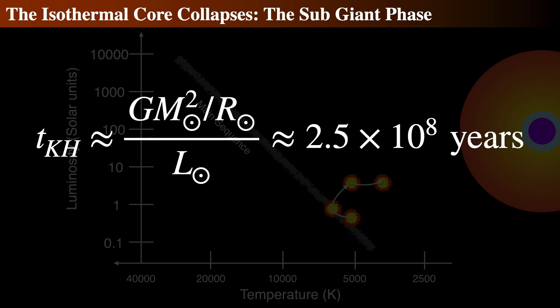At this point, there is no nuclear fuel, so the only way to provide heat is to collapse and convert that energy into heat-then-light.